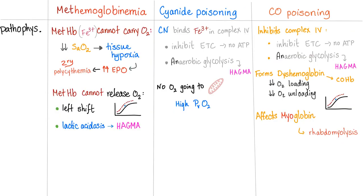Pathophysiology — methemoglobinemia: methemoglobin cannot carry oxygen because it is Fe3+, and ferric cannot bind O2. Decreased oxygen saturation leads to tissue hypoxia, increases EPO as a response, leading to secondary polycythemia — an increased number of red blood cells. Methemoglobin also cannot release oxygen, causing a left shift of the oxygen dissociation curve, lactic acidosis, and high anion gap metabolic acidosis (HAGMA). For cyanide poisoning: cyanide binds ferric in Complex 4, inhibiting the electron transport chain. No ATP is produced, so cells use anaerobic glycolysis as an alternative, leading to HAGMA because lactic acid increases the anion gap and causes metabolic acidosis.